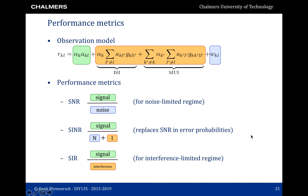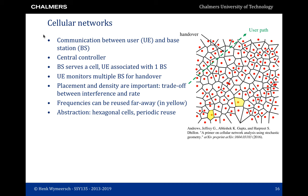These performance metrics are used in cellular communications, where there is communication between users and base stations connected by a central controller. A base station serves a certain cell and a user is typically associated with a single base station, though users monitor multiple base stations for handovers. The user measures power levels from different base stations and changes base station as needed as it moves through different cells.